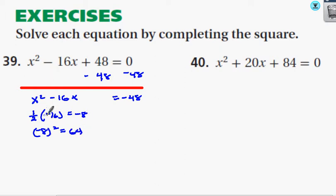I'm going to add this number to both sides of the equation. So I'm going to get x squared minus 16x plus 64 is equal to negative 48 plus 64.